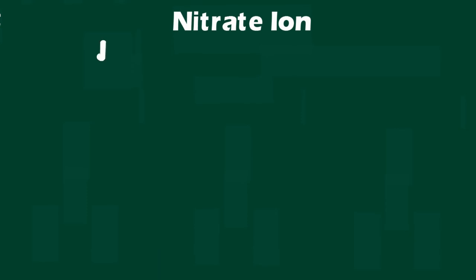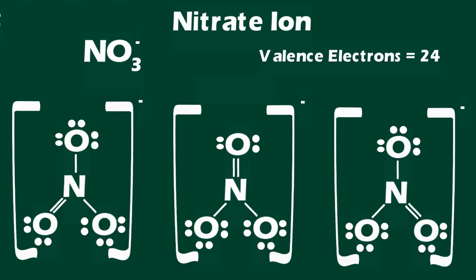Often, when you are drawing Lewis structures, you will find that there is more than one acceptable representation. An example is the nitrate anion.